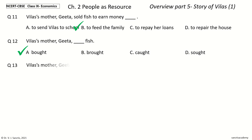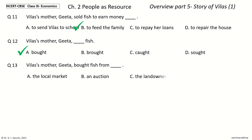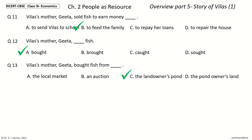Question 13: Vilas's mother Geeta bought fish from dash. The options are: a) The local market, b) An auction, c) The landowner's pond, d) The pond owner's land. And the answer is The landowner's pond. So Vilas's mother Geeta bought fish from the landowner's pond.